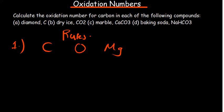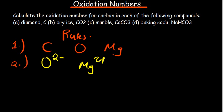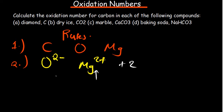Number two: the oxidation number of a monatomic ion is equal to the charge of the ion. So for O²⁻, the oxidation state is negative two. For Mg²⁺, the oxidation state is positive two. Note that for oxidation states, we start with the sign rather than starting with the number.